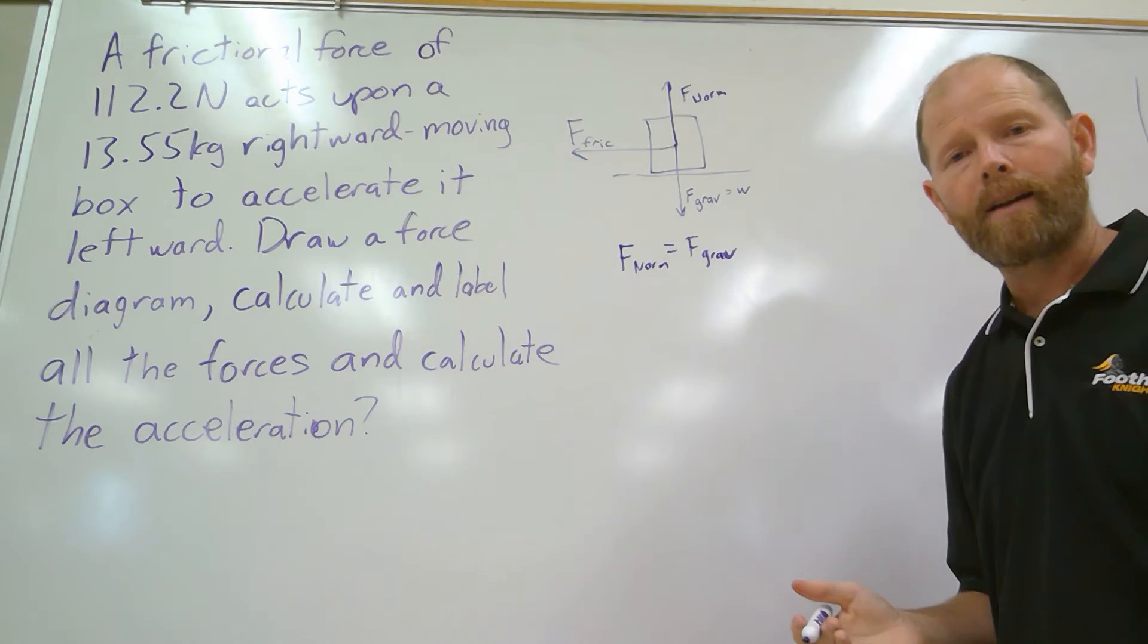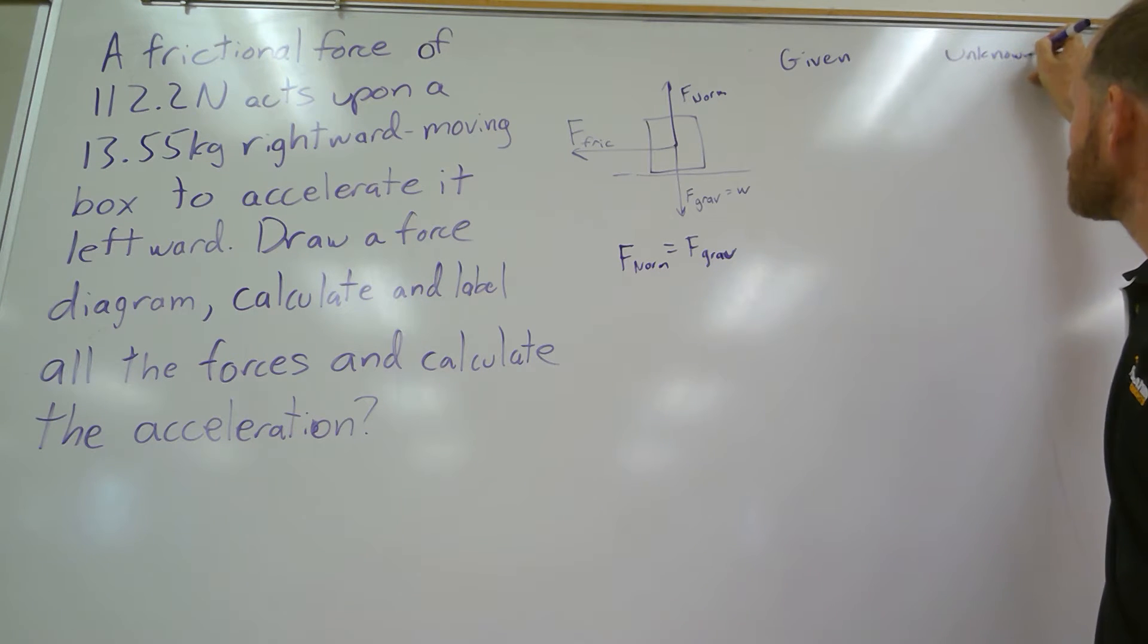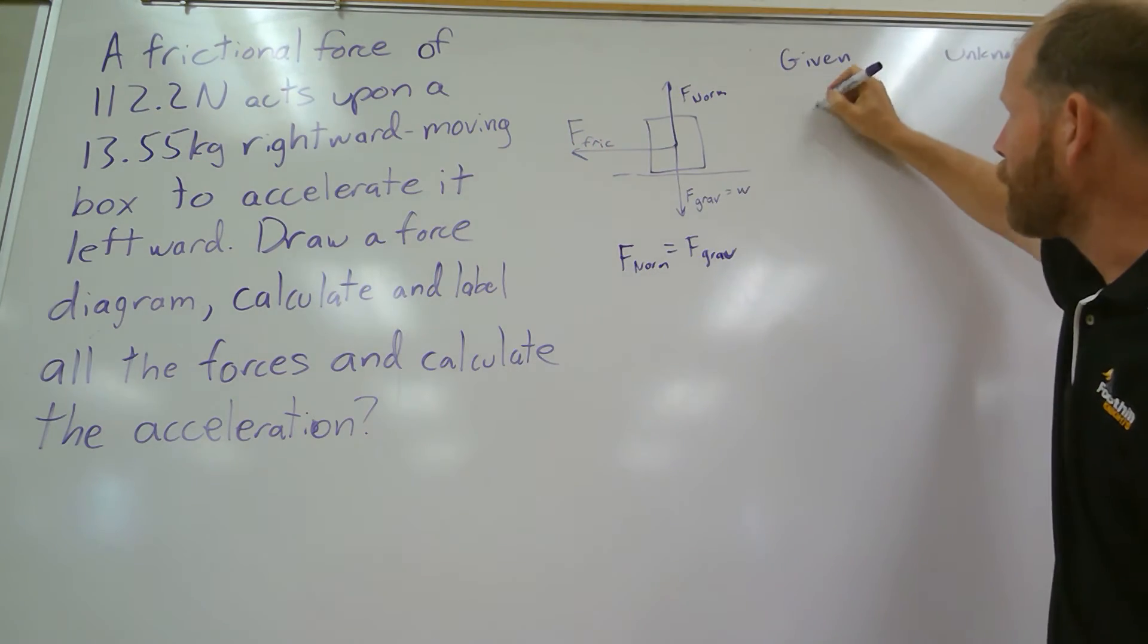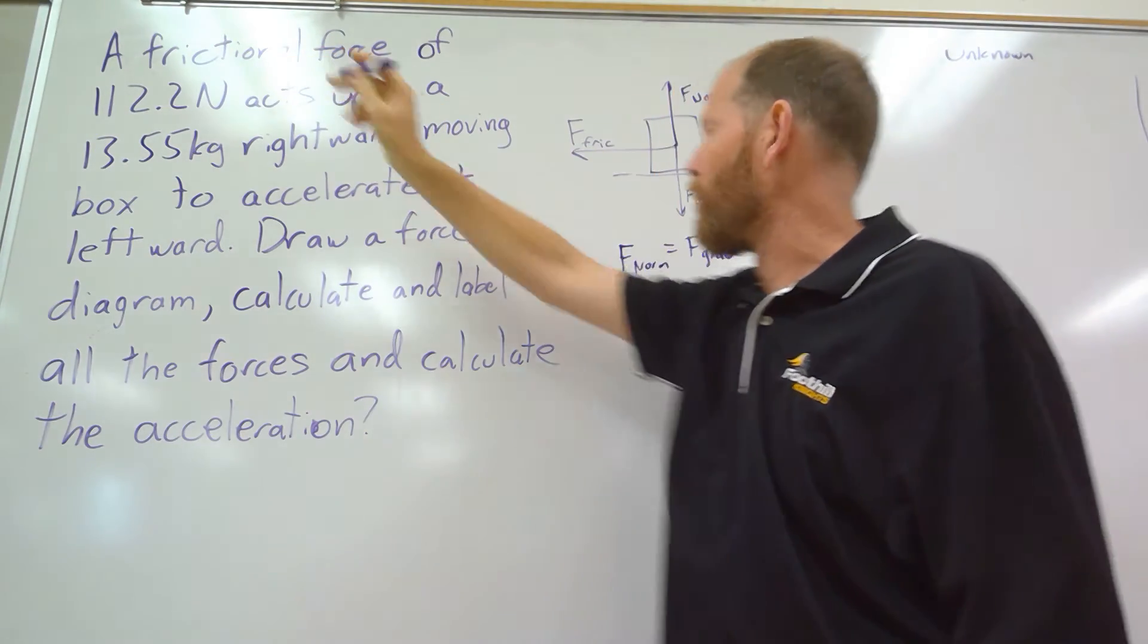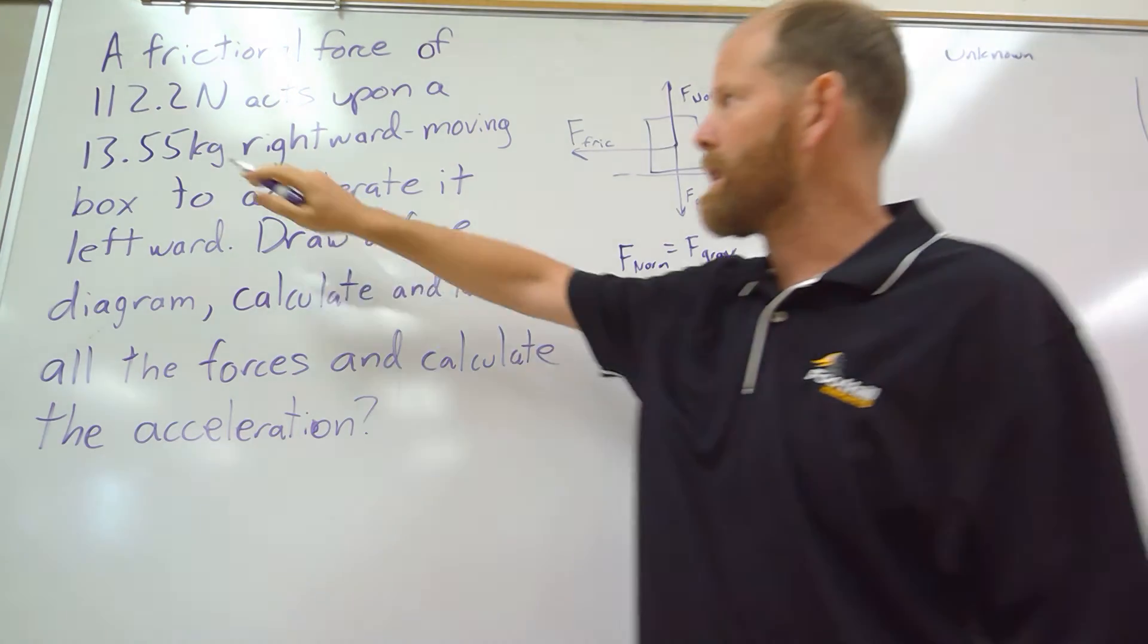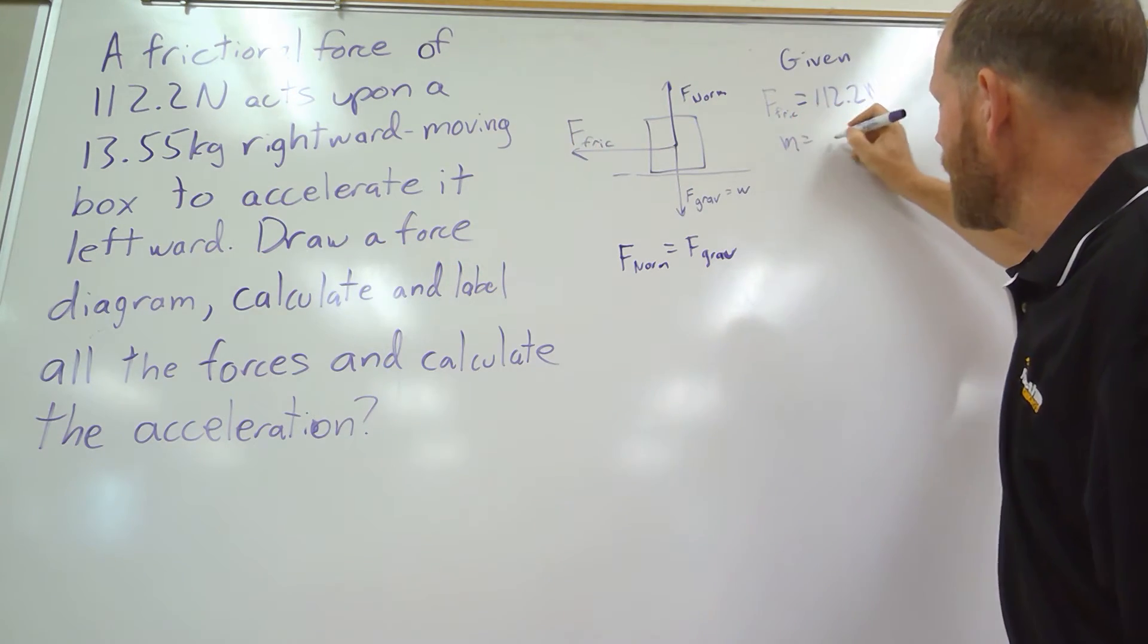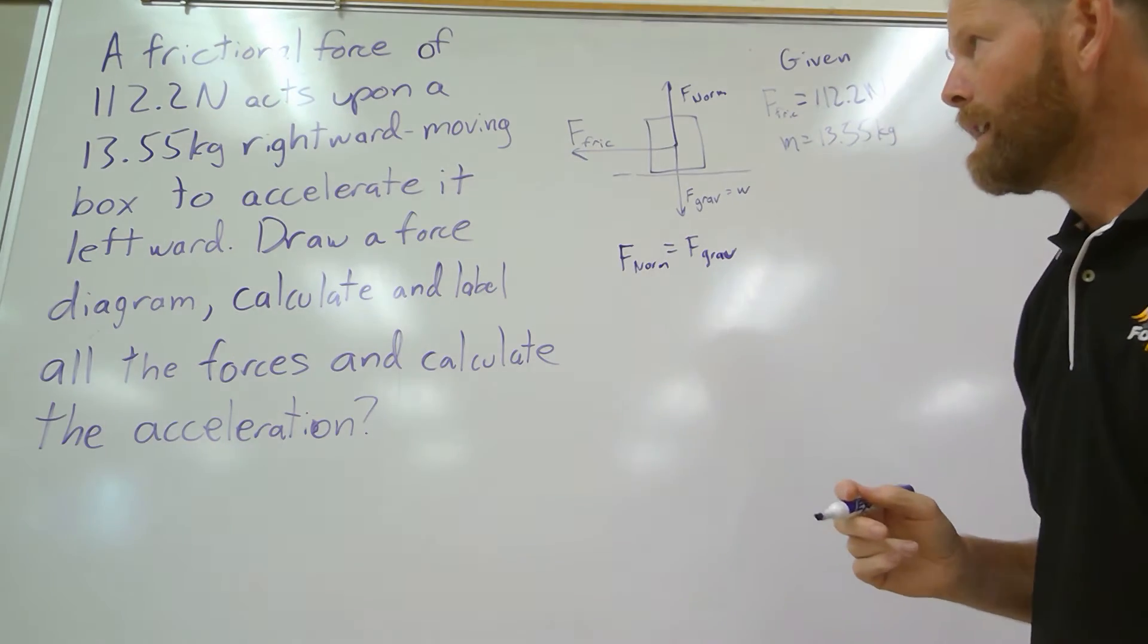We want to list our givens and our unknowns. First our givens. First thing to do is go through and look at the numbers, and then we'll see if there's anything else we need to include. We see that we have a force there of 112.2 newtons, and it's a frictional force. Then we see that we have another number, 13.55 kilograms, and that is the mass of the box.